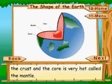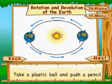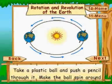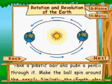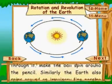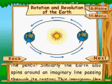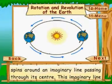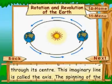The part between the crust and the core is very hot, called the mantle. Take a plastic ball and push a pencil through it and make the ball spin around the pencil. Similarly, the earth also spins around an imaginary line passing through its center.